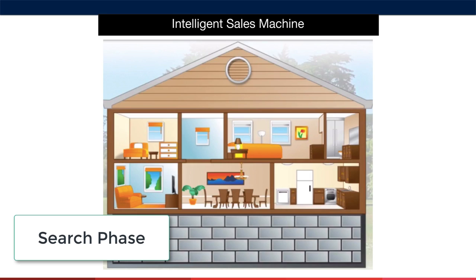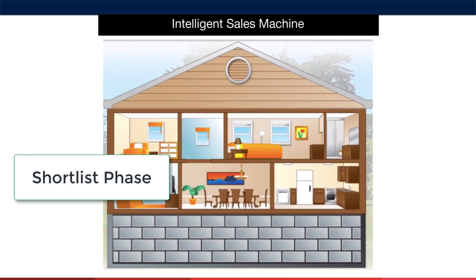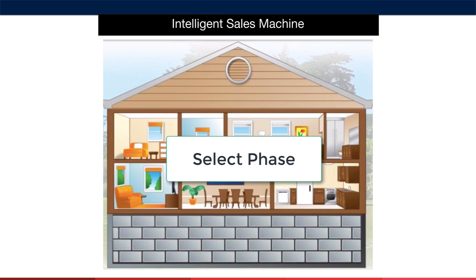Once we have our foundation in place, we've got to build the frame of the house, which includes the walls. You can think of building the frame and the walls as the shortlist phase, which we'll dive into in the next module. Once we have the walls built, we need to decorate the house — we do this by adding in the select phase, where we look at the overall market for your item and its profitability.